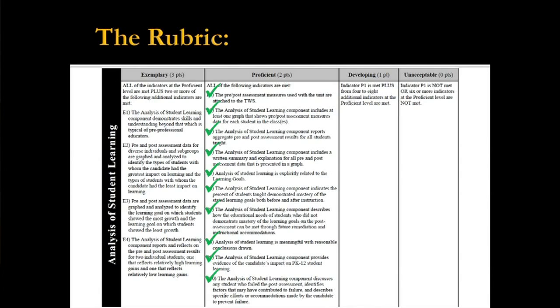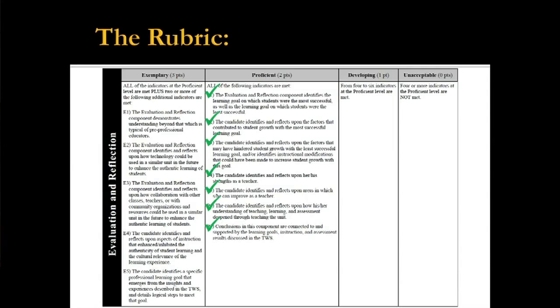One thing to point out: the conclusions you make in this component have to be consistent with the data. If your data says you struggle with ELLs, don't hide from it. The exemplary level requires deeper reflection. And E5 is to set a specific professional learning goal — that should be pretty easy, because the data will show you what your goals should be.